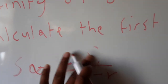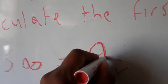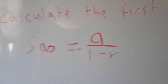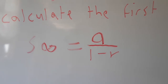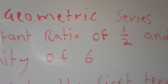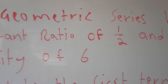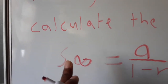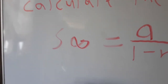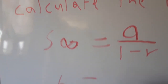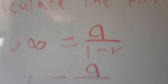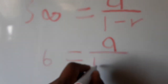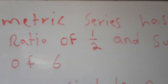In the formula S∞ = a/(1 - r), r is our constant ratio and a is the first term. So substituting: our sum to infinity is six, a is the first term we want, and r is one half — that is one over two.